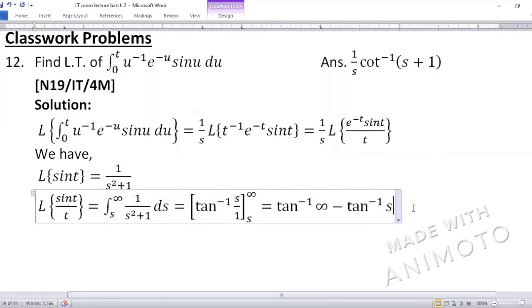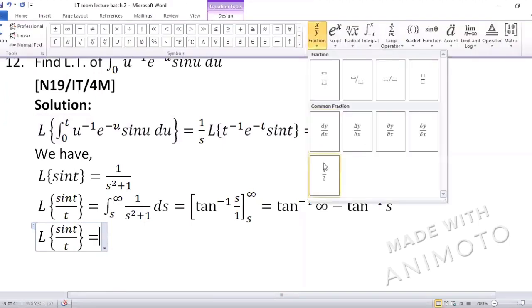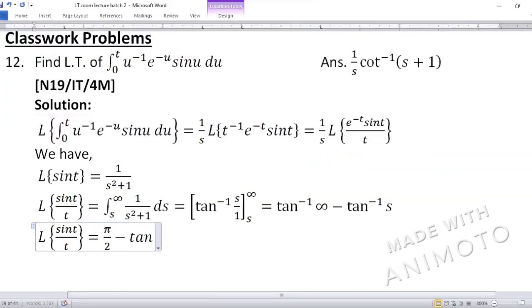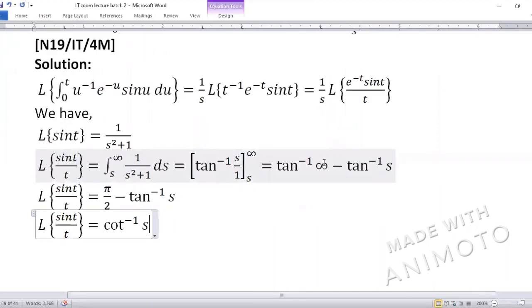Then we know tan inverse infinity ek value hoti hai. Which is 90 degrees pi by 2. So laplace sin t by t becomes equal to pi by 2 minus tan inverse of s. Or simplify karte hai. If you remember pi by 2 minus tan inverse ko ham finally answer likh sakte hai. Kot inverse s. Toh we have simplified sin t by t completely.